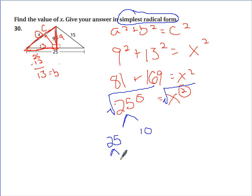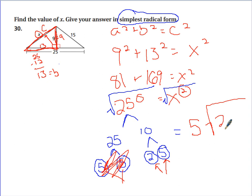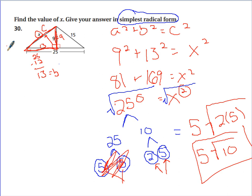25 is 5 times 5 — circle the 5s because they're prime. Then 10 is 2 times 5 — circle those because they're also prime. What matches? I have a match of 5, so a 5 comes out front. The 2 and the remaining 5 don't have matches, so they stay inside the radical. Clean that up: 5 times the square root of 2 times 5 is 10. So X equals 5 square root of 10 units.